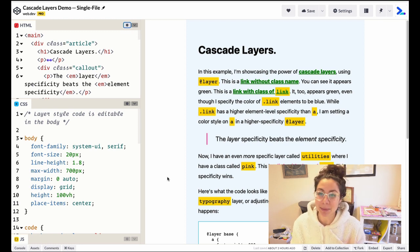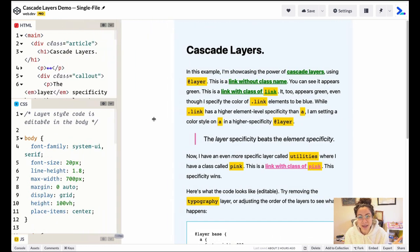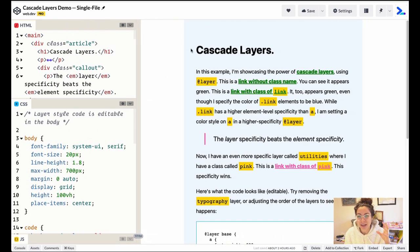So let's take a look at this demo. I have just this file. I'm using CodePen here and I have like a little article where I have some text and within that text you have links and there are these two links here, which don't have a class name. I have a link here that has a class of link. And then I have a link here that has a class of pink.